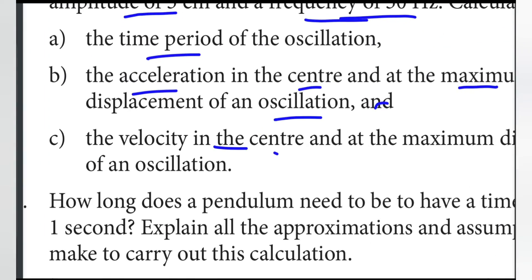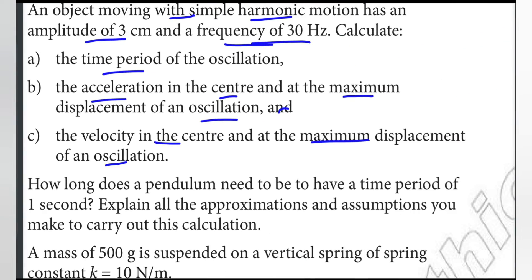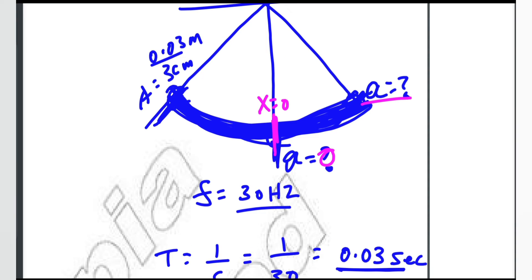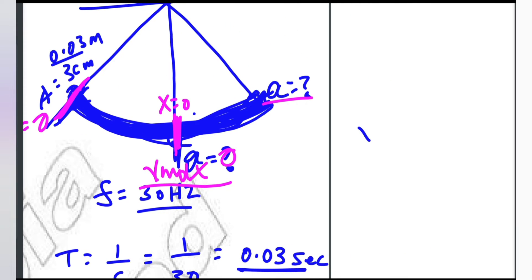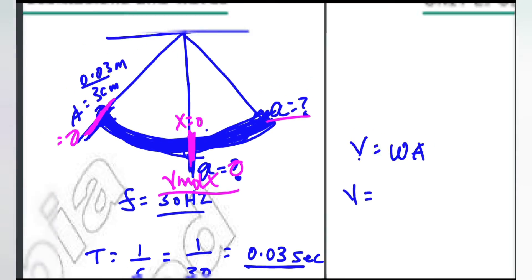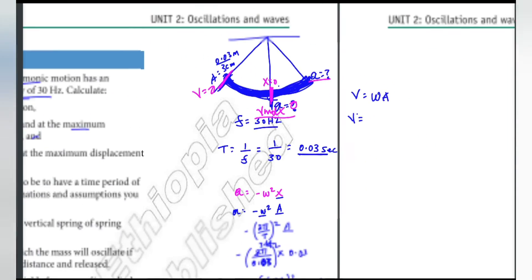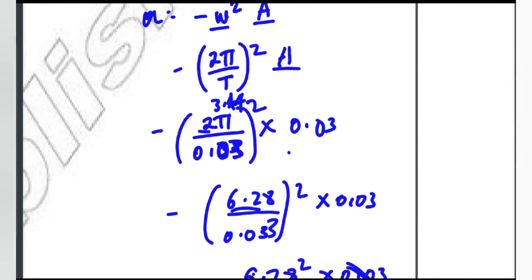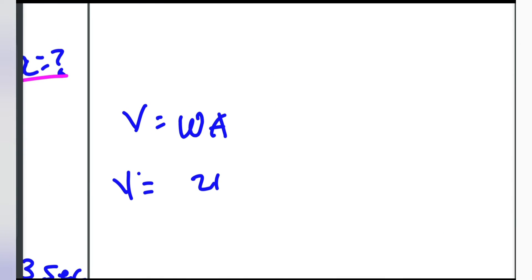For velocity: at the center, velocity is maximum. At maximum displacement, velocity is zero. Velocity at the center equals omega times amplitude.